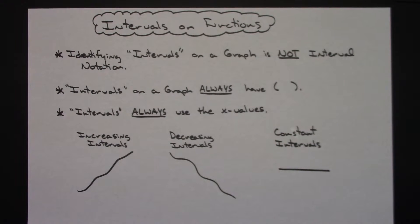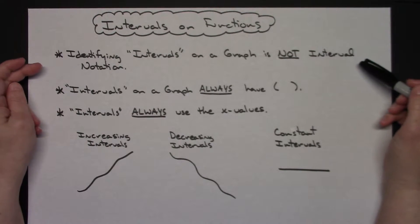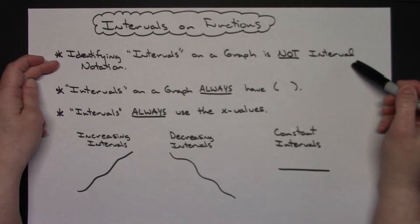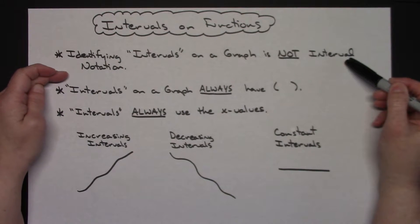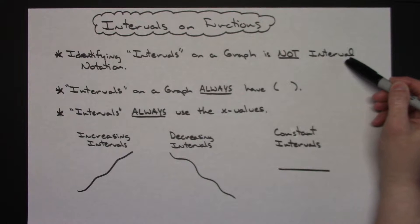Today I'm going to take a look at how you identify intervals on functions. You can be given a graph of a function and asked to identify several different types of intervals. Before we go through an example, we'll start with some general information. If you are trying to identify intervals on the graph, this is not interval notation — you don't want to confuse your interval notation with finding intervals on your function.